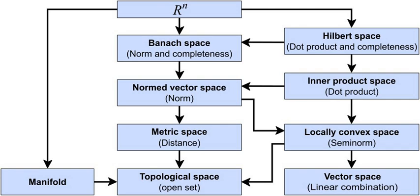A Hilbert space is defined as a complete inner product space; some authors insist that it must be complex, others admit also real Hilbert spaces. Many spaces of sequences or functions are infinite-dimensional Hilbert spaces. Hilbert spaces are very important for quantum theory. All n-dimensional real inner product spaces are mutually isomorphic. One may say that the n-dimensional Euclidean space is the n-dimensional real inner product space that forgot its origin.